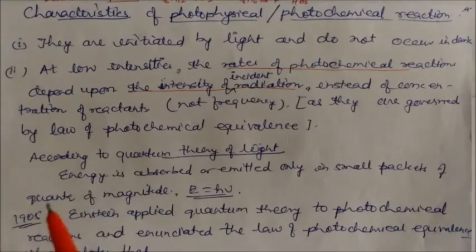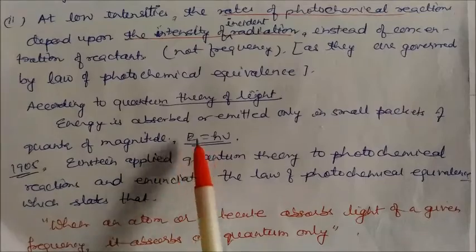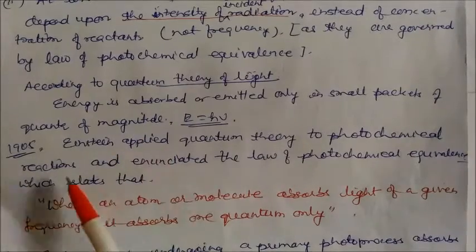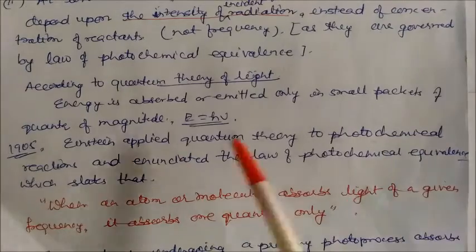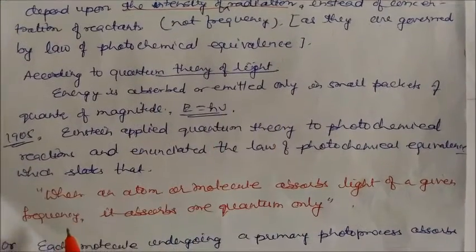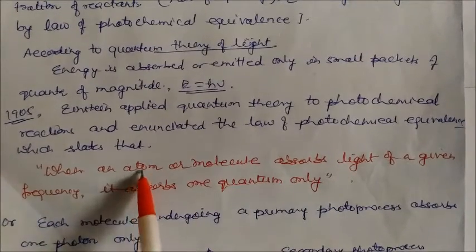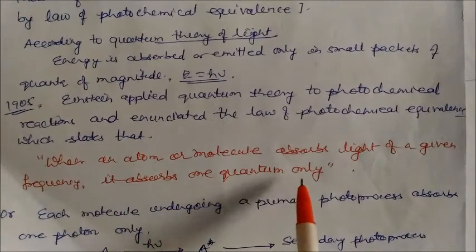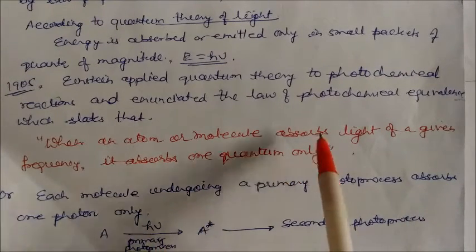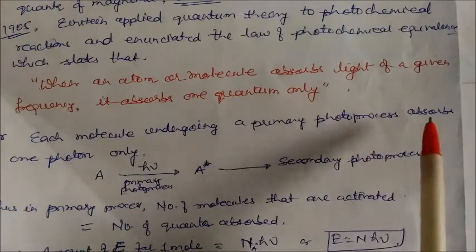Quantum theory states that energy is absorbed or emitted only in small packets called quanta, with magnitude E = hν, given by Planck's constant. In 1905, Einstein applied this quantum theory to photochemical reactions and enunciated the law of photochemical equivalence, which states that when an atom or molecule absorbs light of a given frequency, it absorbs only one quantum. This is the law of 'one quantum, one reaction.' Each molecule undergoing a primary photo process absorbs one photon only.